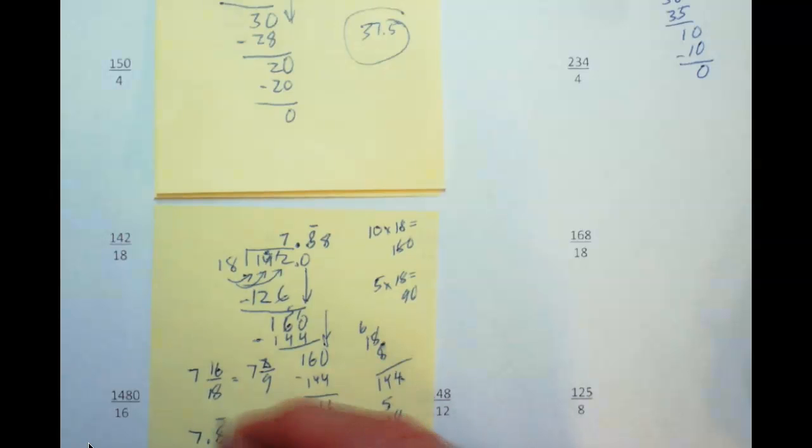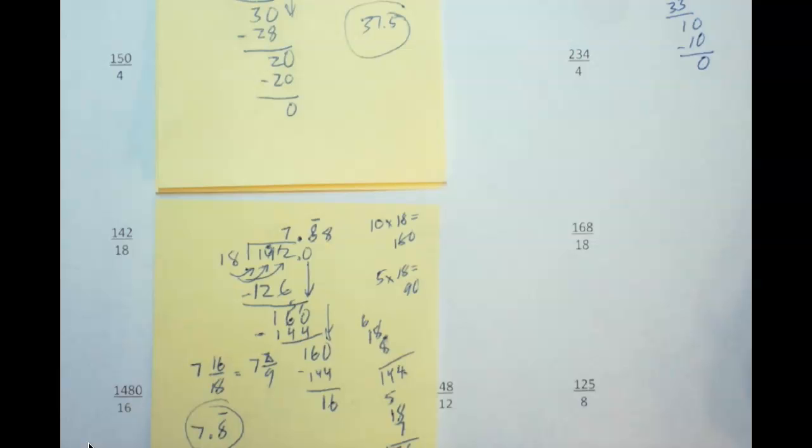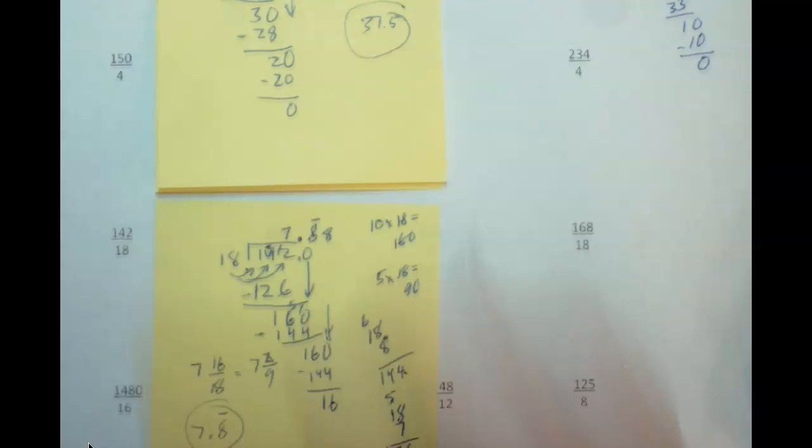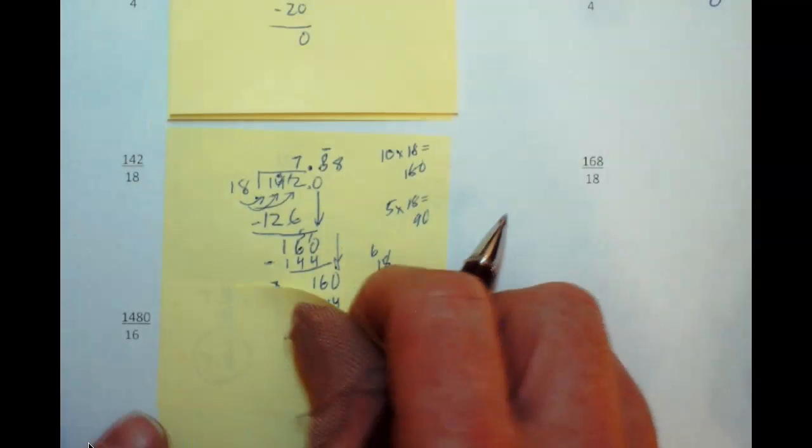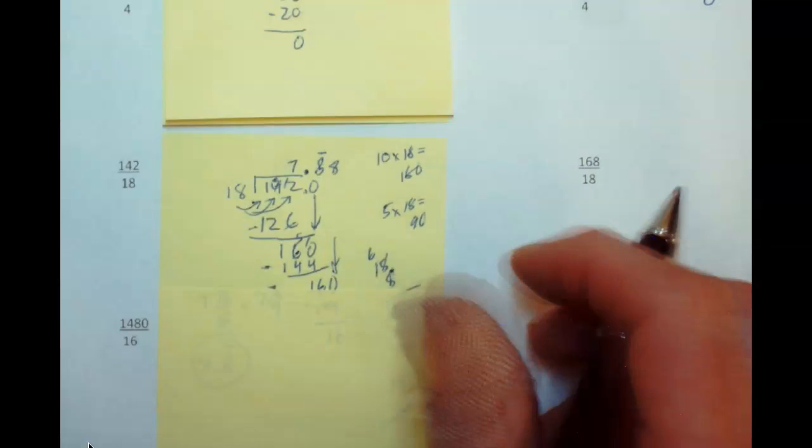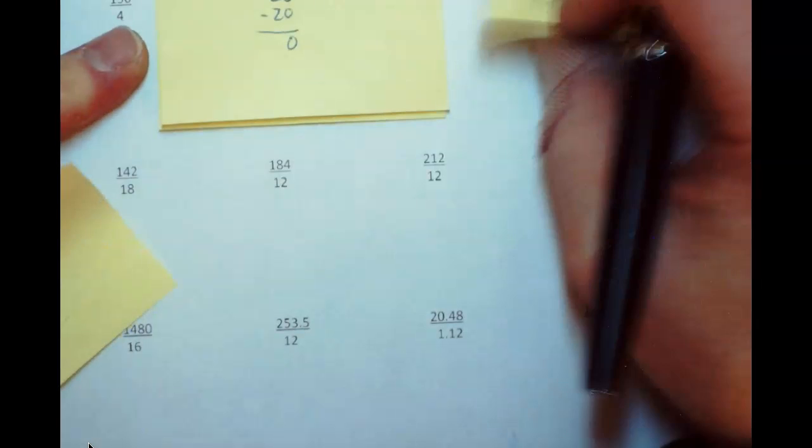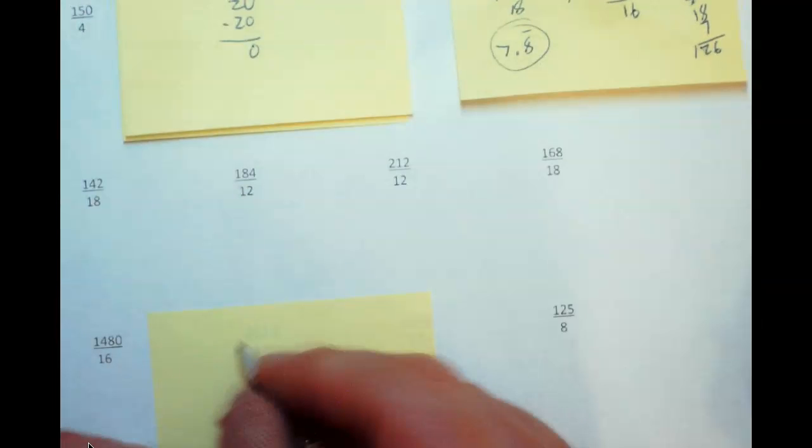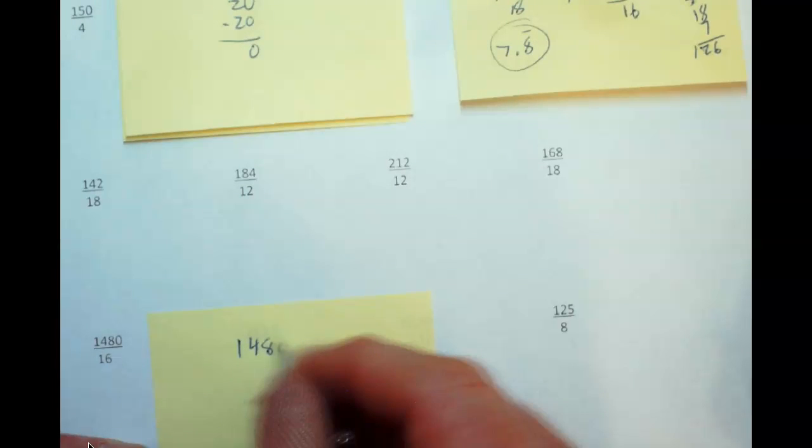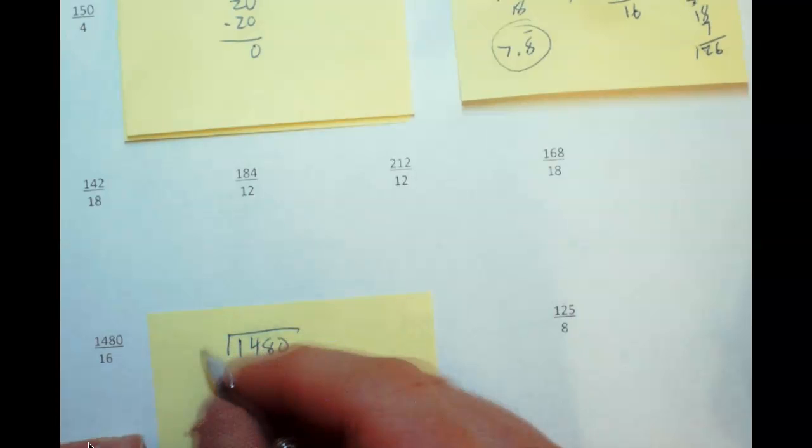Alright, let's do one of the last problems or one of the last row of problems here. We have 1480... you know what, kind of messy and confusing, I'll put this up here. So let's set this up, we have 1480 and we're dividing by 16.